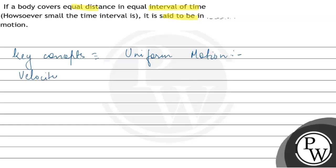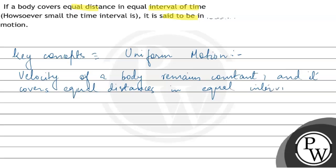Velocity of a body remains constant, and it covers equal distances in equal interval of time. So this motion is called uniform motion.